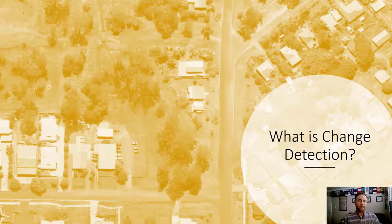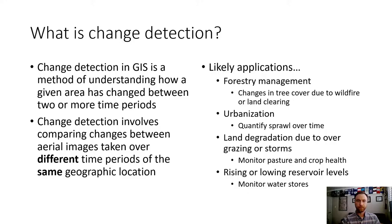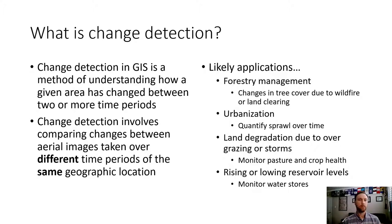So what is change detection? Change detection in GIS is a method for understanding how a given area has changed between two or more time periods. It involves comparing changes between aerial images taken over different time periods of the same geographic location. Different time periods, same geographic location — and ideally from the same sensor, though that's not always possible.